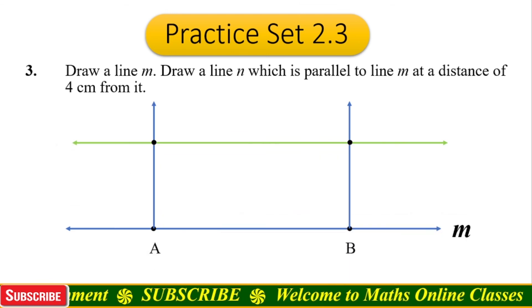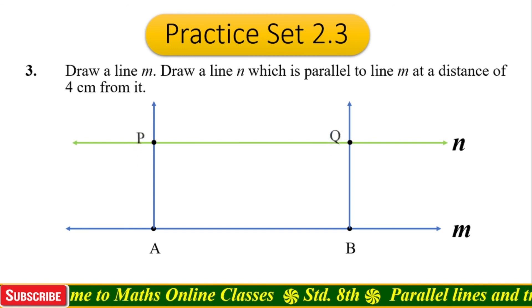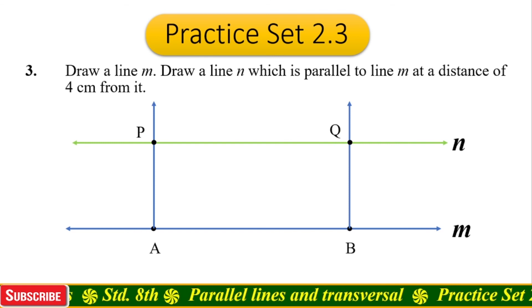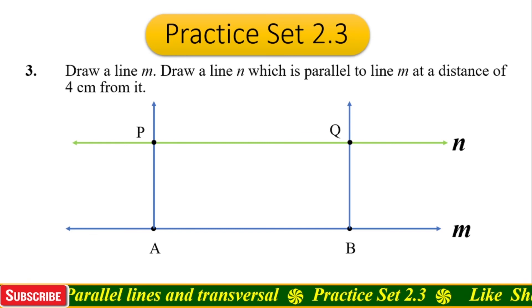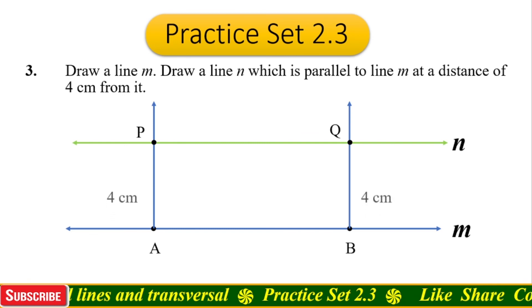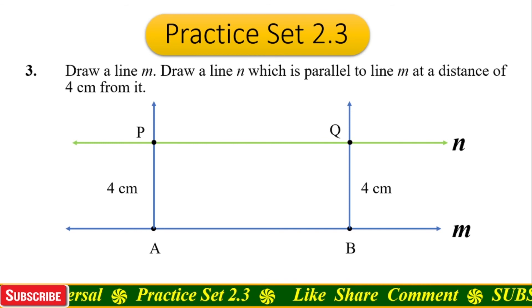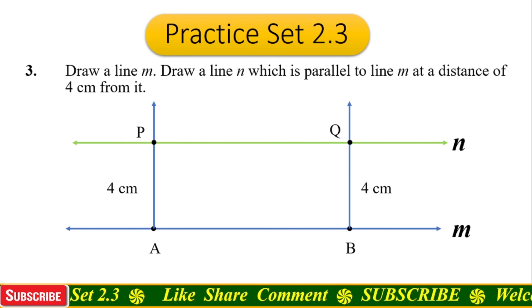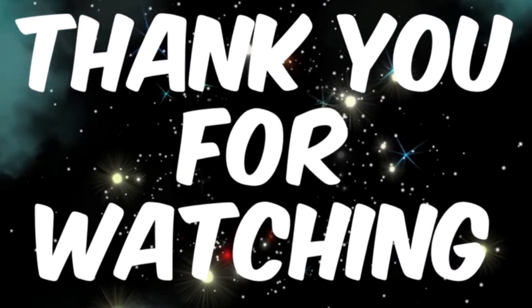Now take a scale and draw a line which passes through these two points. Name this line as line n, and name these two points as point P and point Q. The distance from point A to point P and from point B to point Q is four centimeters. Therefore line m and line n are at a distance of four centimeters. That's all for this video — thanks for watching, God bless you all.